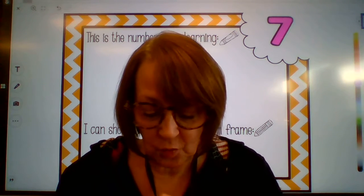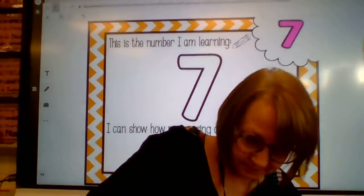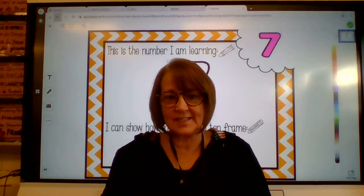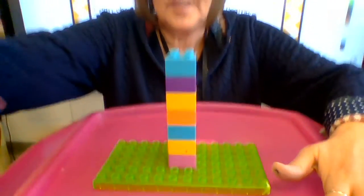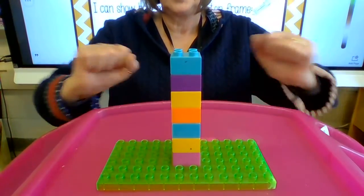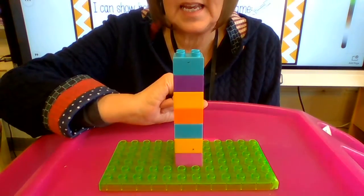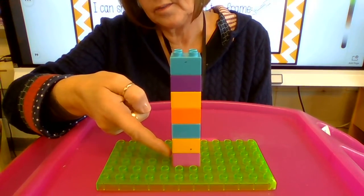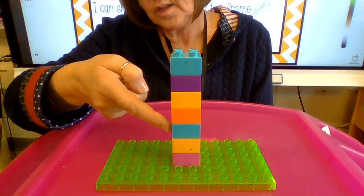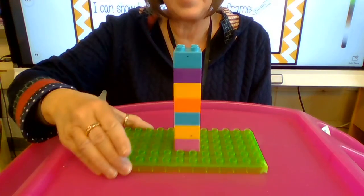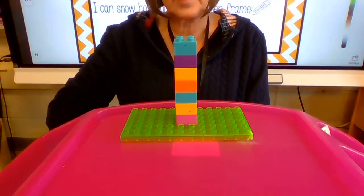We're gonna do that again today with our number seven. So we're gonna start off with a tower of my blocks and you're gonna help me count them. I put my blocks in a line. Let's count and see how many blocks are in my tower. One, two, three, four, five, six, seven. Seven blocks are in my tower.